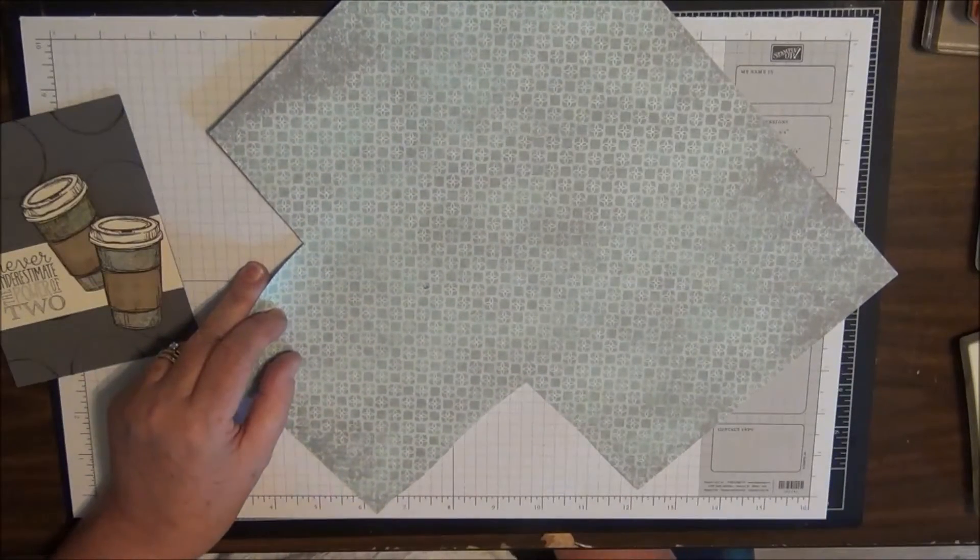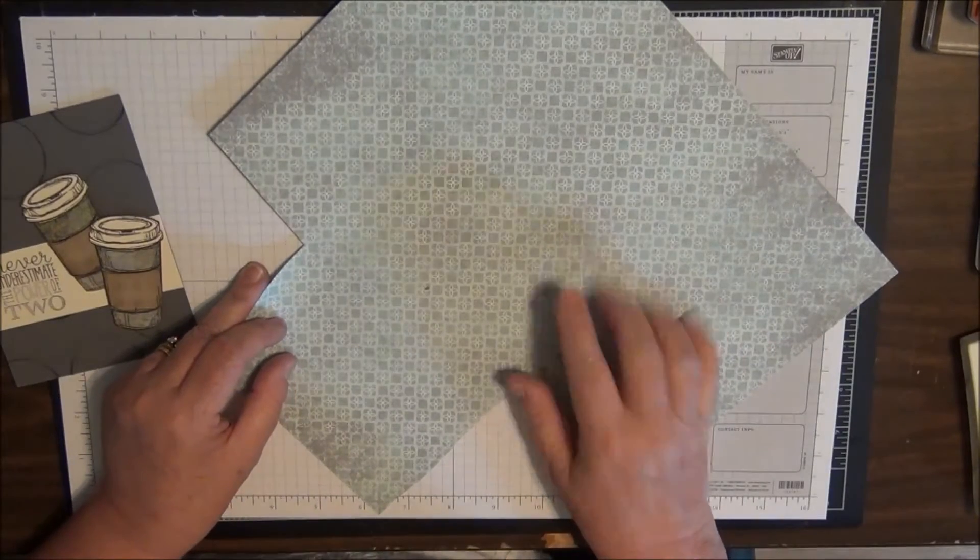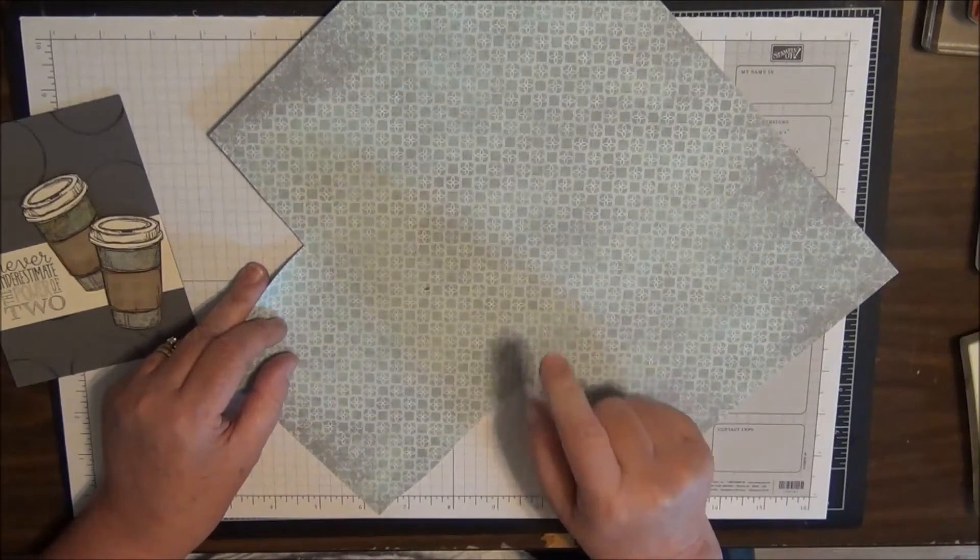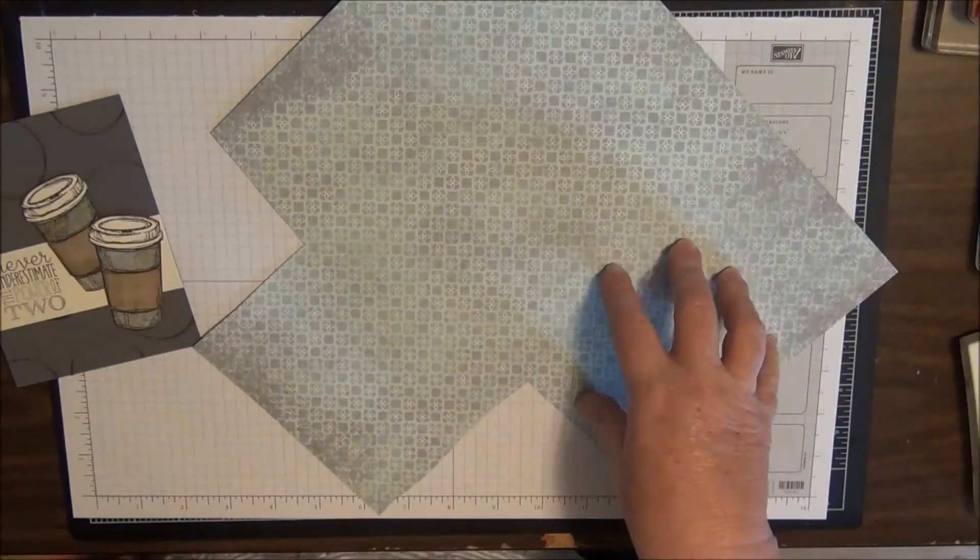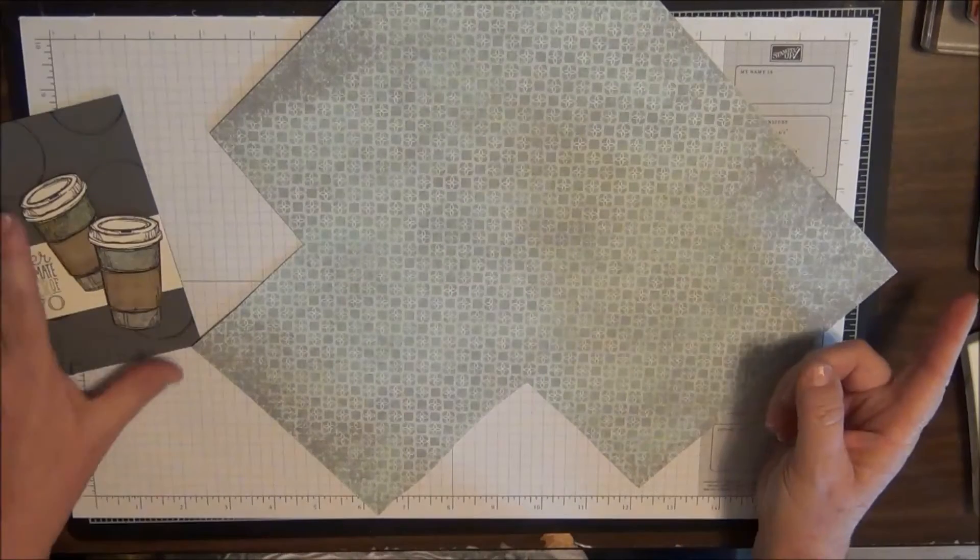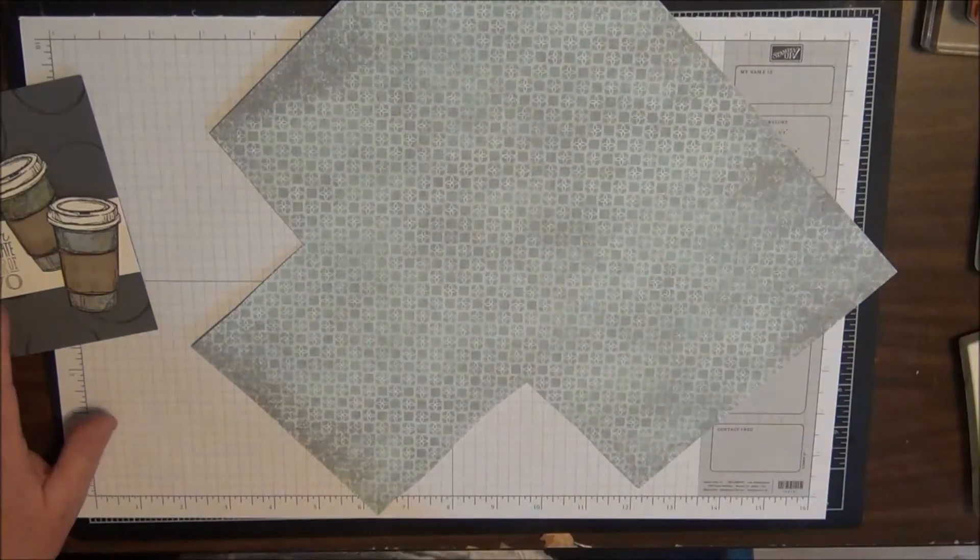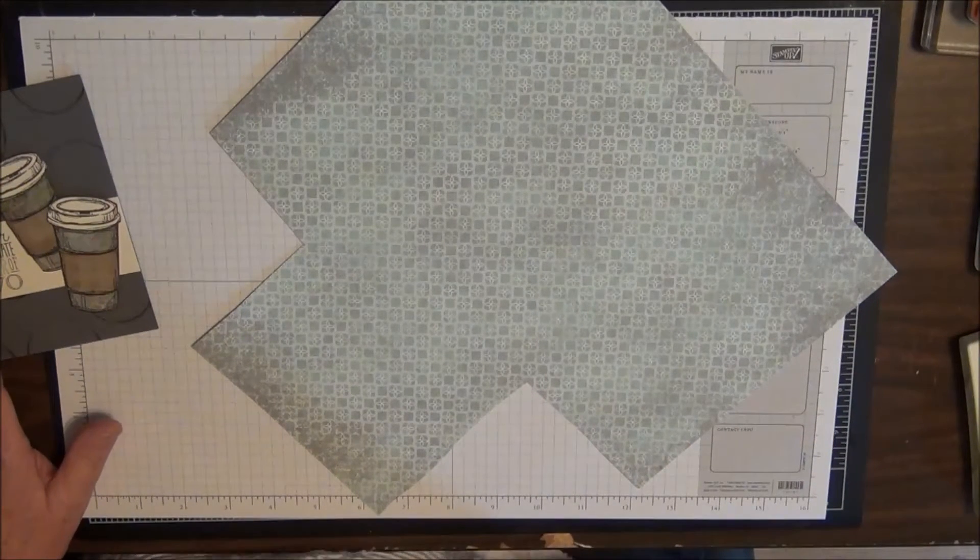If you're watching this in July of 2013, Stampin' Up! just has a special they announced today, because when I'm recording this it's July 1st. You can buy three packs of designer series paper and get one free. Designer series paper is $10.95, so that's an awesome savings.